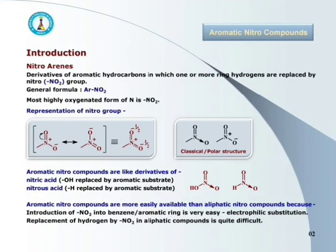Let's see the representation of nitro group. The first two are the resonating structures of nitro group, in which nitrogen acquires a positive charge whereas one of the oxygens acquires a negative charge. The third one is the resonance hybrid, which shows that the negative charge is partially distributed on both oxygens. The next are the classical and polar structures. In the classical structure, instead of showing charges on nitrogen and oxygen, an arrow pointing towards oxygen is shown, indicating the flow of electrons towards oxygen.